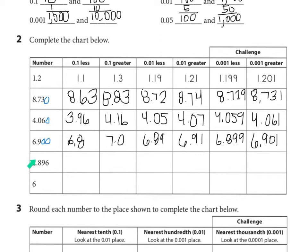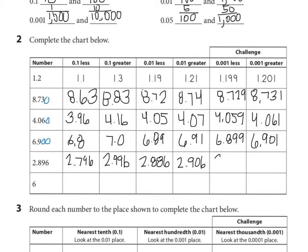Looking at the next one: two and eight hundred ninety-six thousandths. One tenth less — that becomes seven — so two and seven hundred ninety-six thousandths. One tenth greater would be two and nine hundred ninety-six thousandths. One hundredth less: two and eight hundred eighty-six thousandths. One hundredth greater — if the nine becomes one greater it becomes a ten, and eight becomes nine — so the answer is two and nine hundred six thousandths. One thousandths less: two and eight hundred ninety-five thousandths. One thousandths greater: two and eight hundred ninety-seven thousandths.